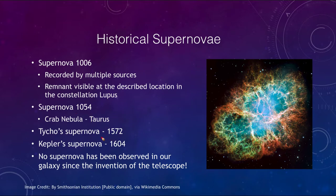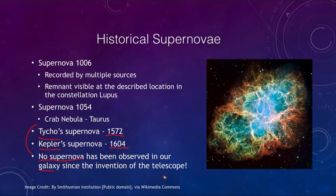The last couple of supernovae recorded are from 1572 and 1604 — sometimes known as Tycho's supernova and Kepler's supernova. Tycho was the great observer who happened to observe a supernova, and Kepler, who did the calculations for planetary orbits, observed a supernova as well. Notably, no supernova has been observed in our galaxy since the invention of the telescope — Kepler's supernova of 1604 was the last one seen in our galaxy.